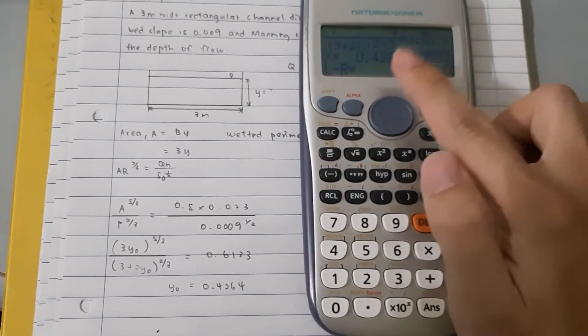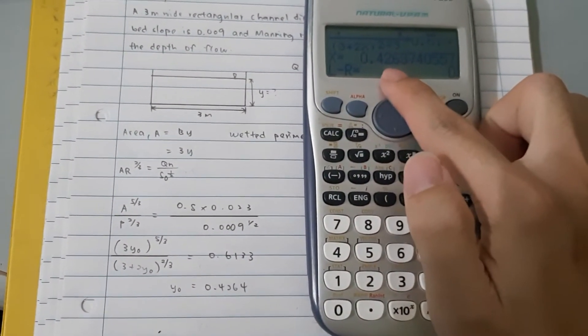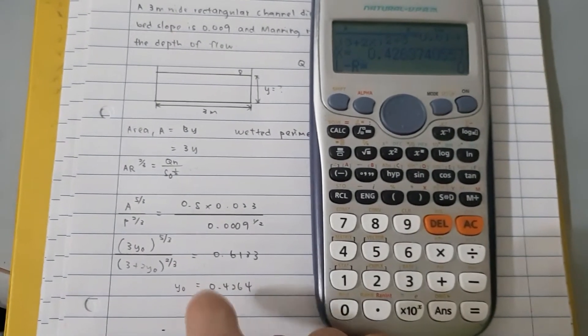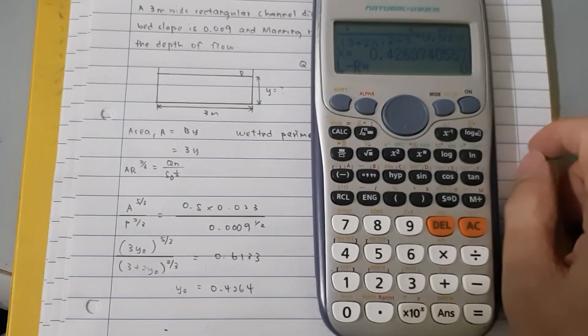So, as you can see, X is equal to 0.42637. Here is the answer. That's all from me. Thank you.